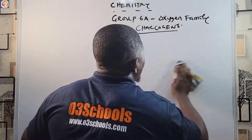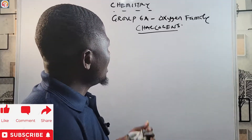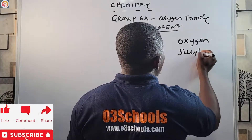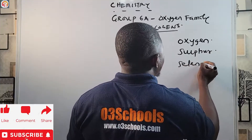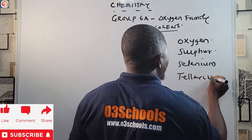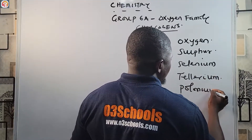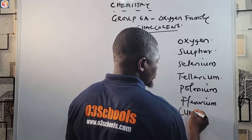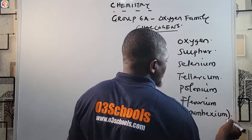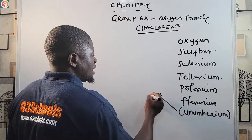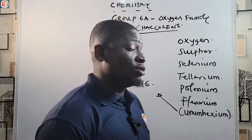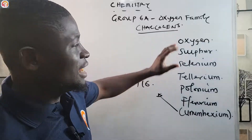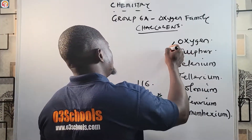Now let's get to why we are here today: Group 6A elements. The elements in this group include oxygen, sulfur, selenium, tellurium, polonium, flerovium, and ununhexium. Ununhexium has atomic number 116 and has no use outside laboratories — it is only produced in the laboratory. The two most important elements in Group 6A are oxygen and sulfur.